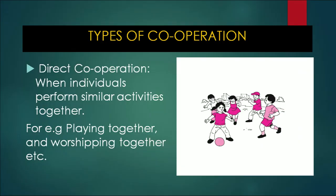Now let us discuss the types of cooperation. There are many bases through which we can identify different types. There is direct cooperation and indirect cooperation. Direct cooperation is when individuals perform similar activities together. You can see a picture of kids playing together — they have the common objective of enjoying the game. So playing together is one form of direct cooperation.